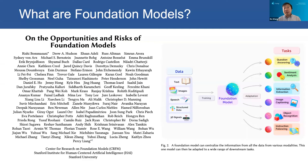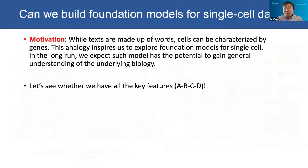The talk is about foundation models for single cell. The core idea of a foundation model is that it is a system that can absorb common knowledge from large amounts of data, such as text or images. And once the model is trained, we can adapt this foundation model to many downstream tasks with no or very few data for each specific task. The motivation is quite clear: while texts are made up of words, cells can be characterized by genes. This analogy inspires us to explore foundation models for single cell.